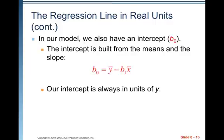In our model, we also have an intercept, B0. The intercept is built from the means and the slope, and the point X-bar, Y-bar is always on your linear regression line, so you can find the slope by doing Y-bar minus B1 times X-bar. Our intercept is always in units of Y, because it's a Y-intercept.